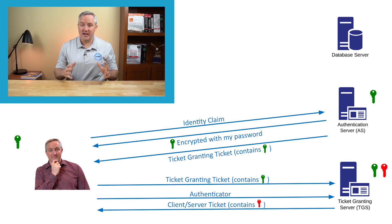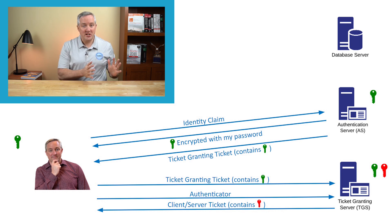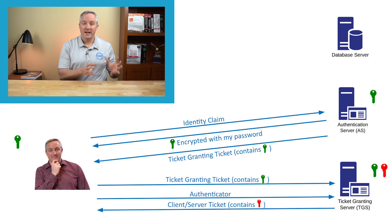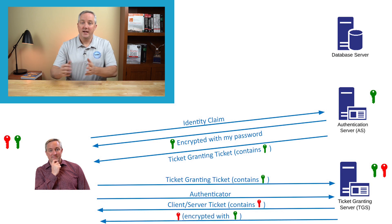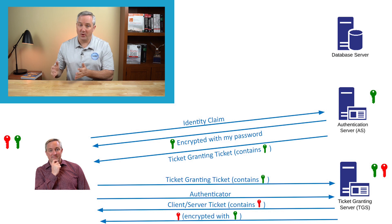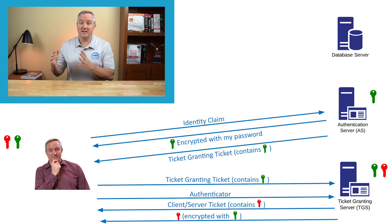Next, the TGS sends me back two messages. The first is a Client Server Ticket, which is very similar to the Ticket Granting Ticket, but instead of being encrypted with the TGS key, it's encrypted with the Database Services Key. This is the ticket that I need to access the database server, and it contains a new key generated by the Ticket Granting Server called the Client Server Session Key. The second message the TGS sends me is the Client Server Session Key that I'm going to use to communicate with the database server, encrypted with the Client TGS Session Key, which I can decrypt.